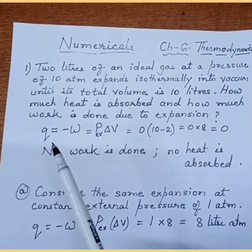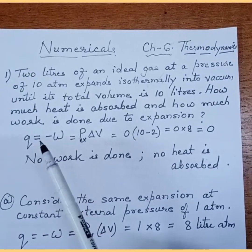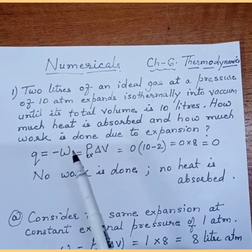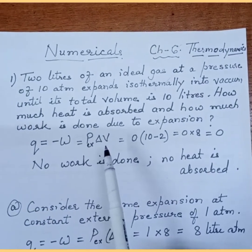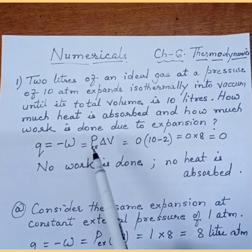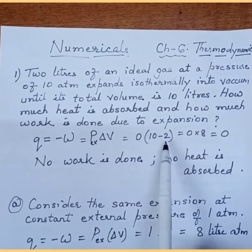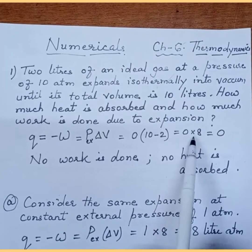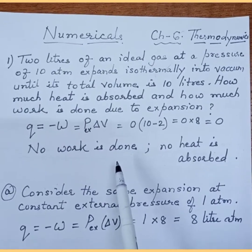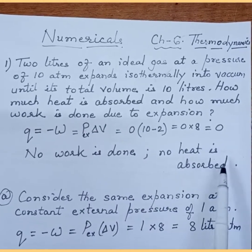The heat absorbed by the system is equal to the work done by the system. Q is equal to minus W, and W is equal to minus P·delta V, so minus W equals P_external·delta V. Since it is work done in vacuum, P_external is 0. Delta V is final minus initial volume: 10 minus 2 equals 8, so 0 into 8 equals 0. That means no work is done when the gas expands isothermally into vacuum, and no heat is absorbed.